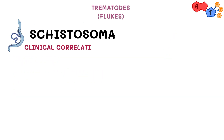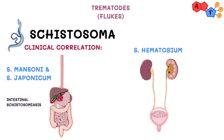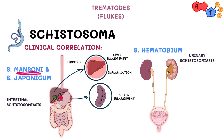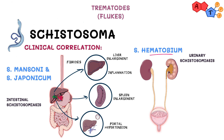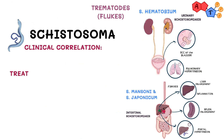For clinical significance: Schistosoma mansoni and japonicum affect the GI tract, causing intestinal schistosomiasis, while Schistosoma haematobium affects the urogenital tract, leading to urinary schistosomiasis. Schistosoma mansoni can also cause liver and spleen enlargement, fibrosis, inflammation, and portal hypertension. Schistosoma haematobium can cause squamous cell carcinoma of the bladder, and pulmonary hypertension — compared to portal hypertension in mansoni. For treatment, we use praziquantel.